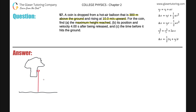It doesn't say specifically that the coin is at 300 meters, but we have to make that assumption. Now, the balloon itself is traveling upwards. If the balloon is traveling upwards, what does that mean for the coin? If the coin is on the balloon, it's also traveling upwards - at 10 meters per second.